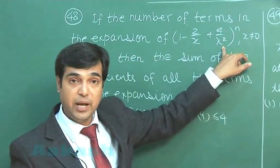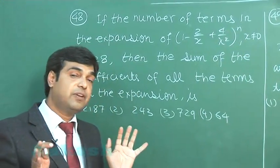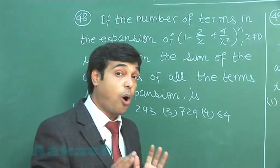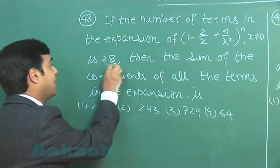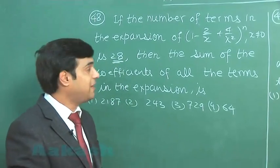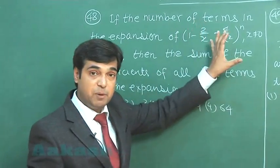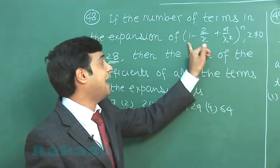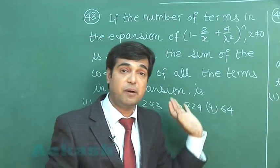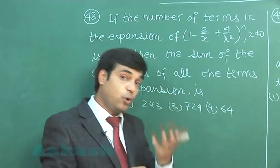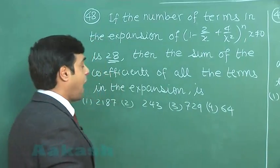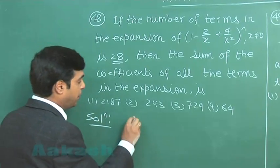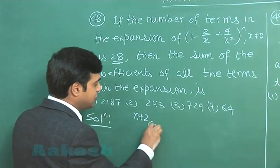So the number of terms in this case will be obtained as 2n plus 1, that is odd, but it is given here it is 28. That means this question has been framed by considering these three terms as different ones, like (x + y + z) raised to the power n. If I approach that way, the number of terms would be n+2 C 2 equals 28.